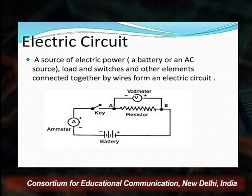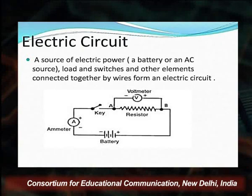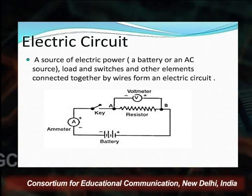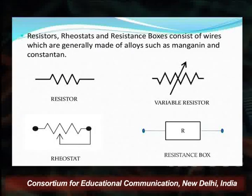You see in the diagram that here we have voltage, resistor, key, battery, and ammeter. These are connected by wires to produce the required output — that is the electric circuit. This simple electric circuit is made of a voltage resistor, battery for power supply, and an ammeter to measure current. Resistors, rheostats, and resistance boxes consist of wire generally made of alloys such as manganin and constantan. There are various types of resistors: fixed resistor, variable resistor, rheostat, and resistance box.